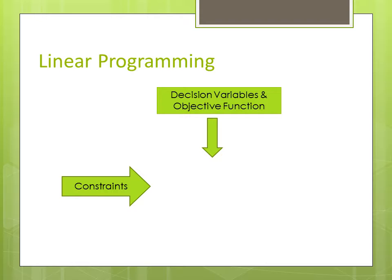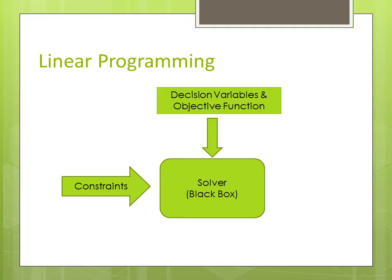Once we break down the problem into this structure, we feed it to a black box called Solver — a mathematical tool you will learn about during your MBA. You don't need to worry about the details of what it does; think of it as a black box where you give it numbers and it gives you numbers in return. Once you give these numbers to Solver, it will give you an allocation decision — for every particular taxi, it'll tell you which area it should go to. That's the first technique: linear programming.